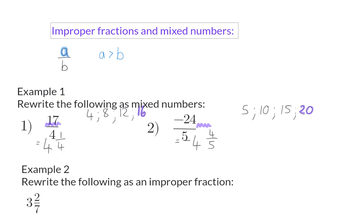Example 2. Rewrite the following as an improper fraction. In this case, we now have a mixed number that consists of an integer as well as fractions. The integer of 3 indicates that 3 complete groups of 7 can be made. 3 times 7 is 21, and along with this 21, we also have the extra 2 in the numerator, and this means that in total we have 23 sevenths.